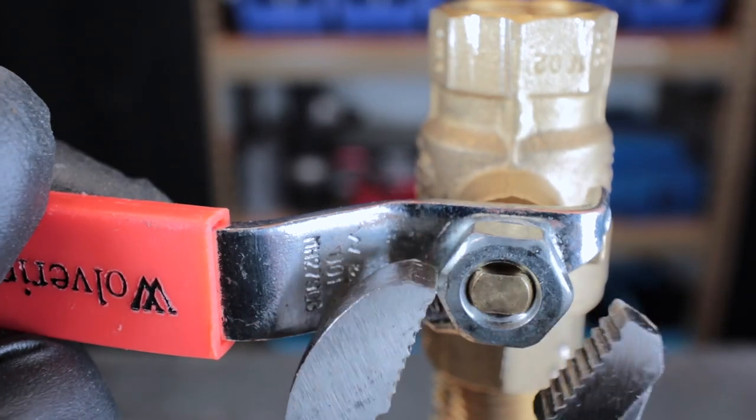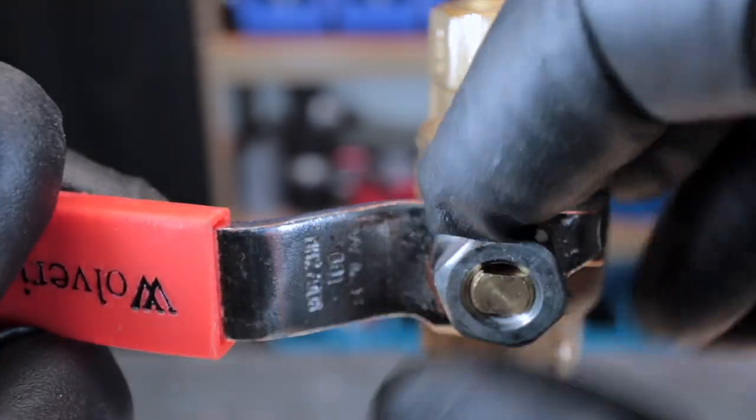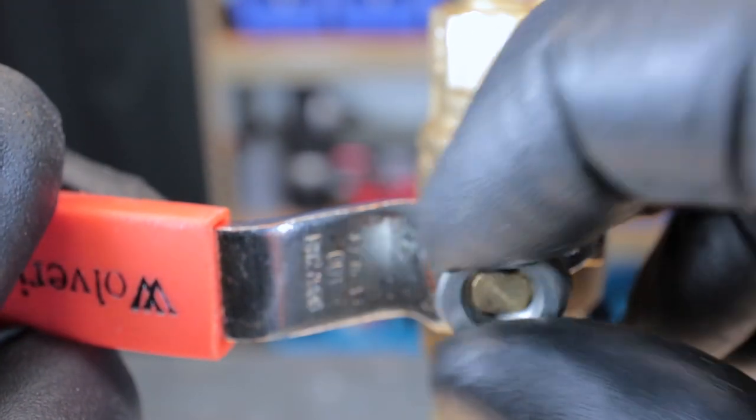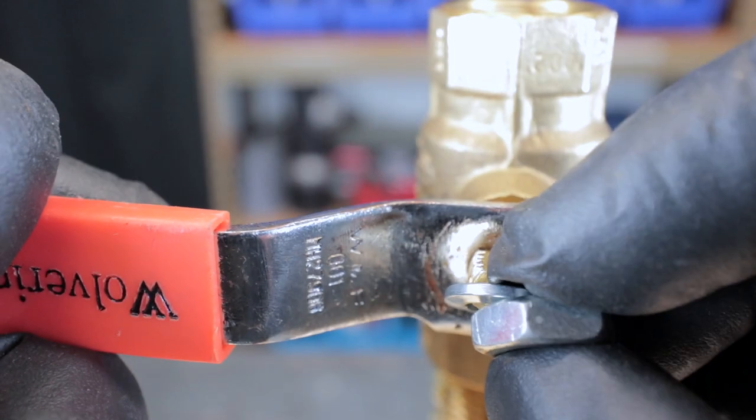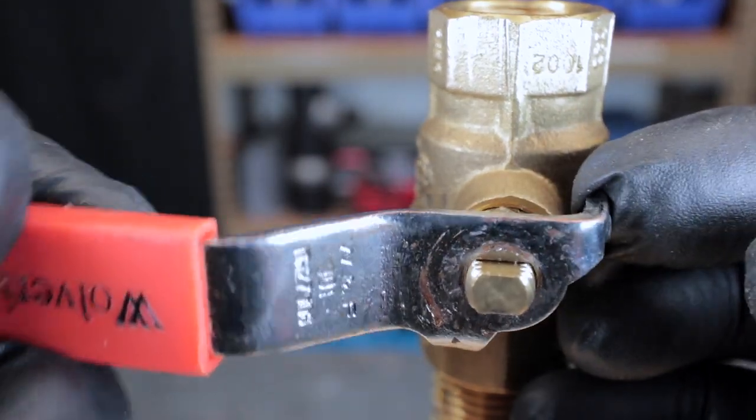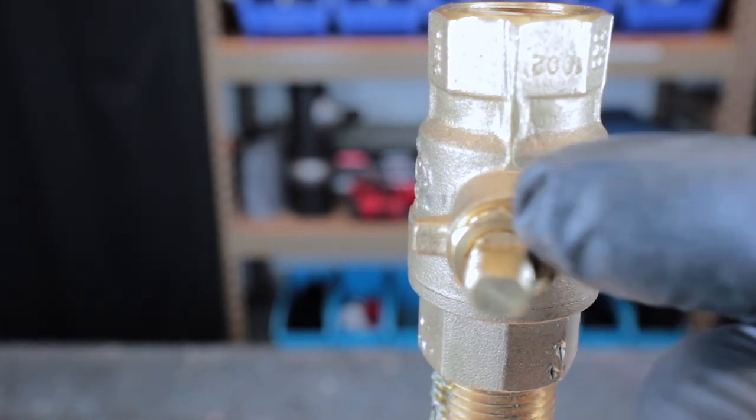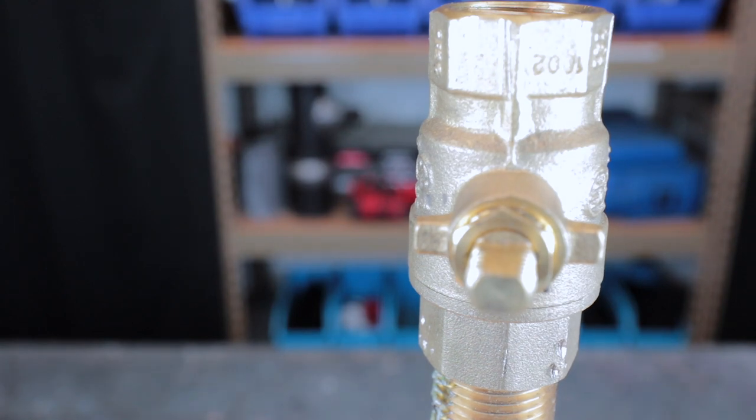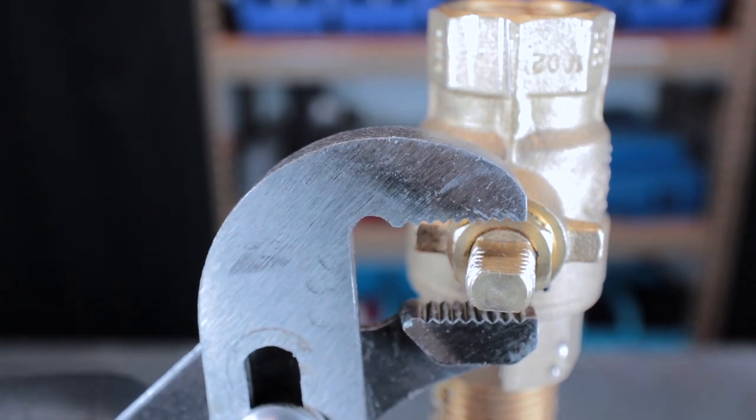We'll take this nut off and we'll back this handle off. Take the lock nut off and take the handle. As you can see there's that little packing nut that we saw before.